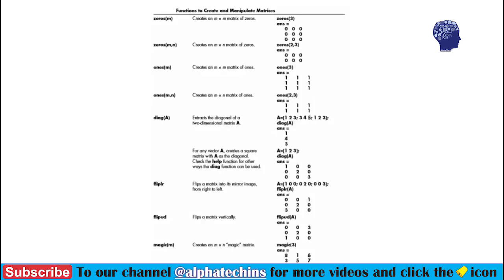Here we have functions to create special matrices. The first one is zeros, which creates an n by n matrix of zeros. There is also a version where we define the number of rows and columns — for example, two rows and three columns. We can use either form according to our need.